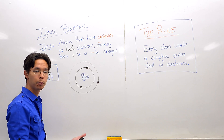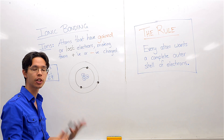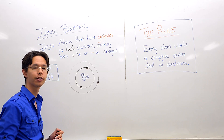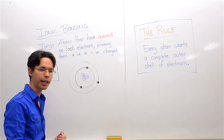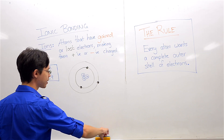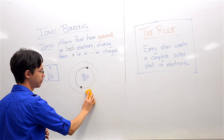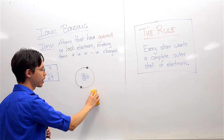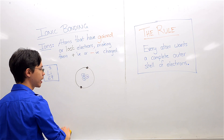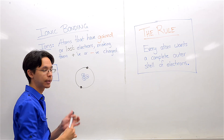Then it'll be a lot more stable, much more preferable. It will have achieved its purpose in life to become the most stable atom it can be. As it gives away its outermost electron, resulting in that electron shell disappearing, the inside becomes exposed and is completely full.